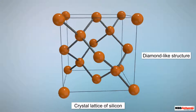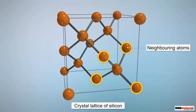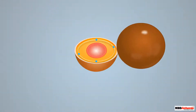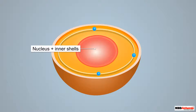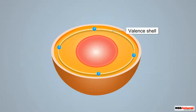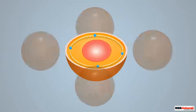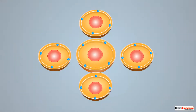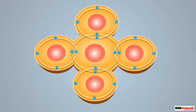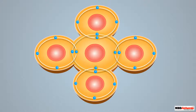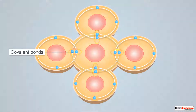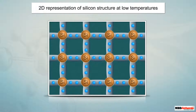Considering the crystal lattice of silicon, it has a diamond-like structure where each atom is surrounded by four nearest neighboring atoms. Each silicon atom has four valence electrons. In its crystalline structure, every silicon atom shares one of its four valence electrons with each of its four nearest neighboring atoms, and also takes a share of one electron from each of its neighbors. These shared electron pairs form covalent bonds.